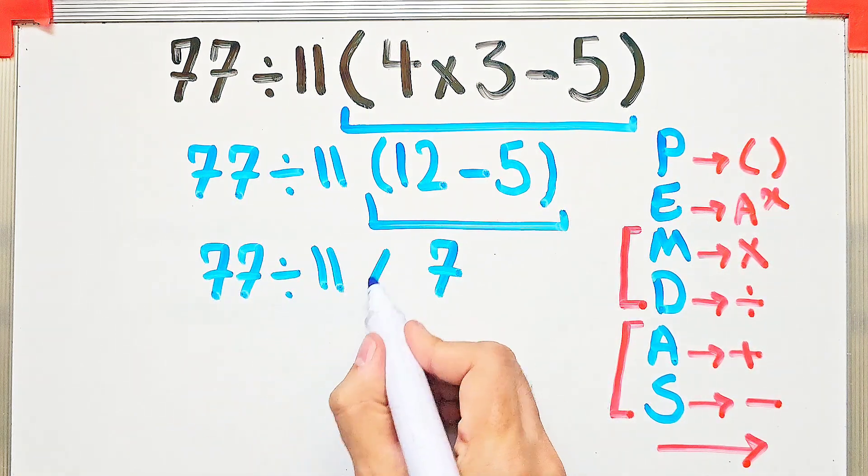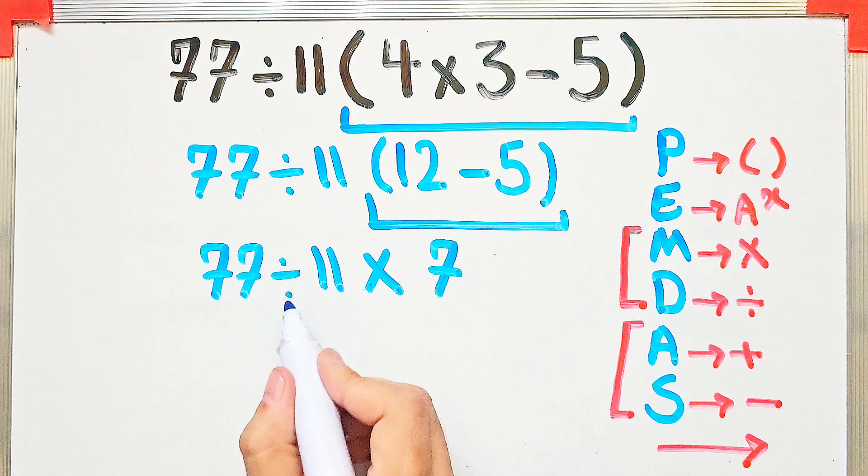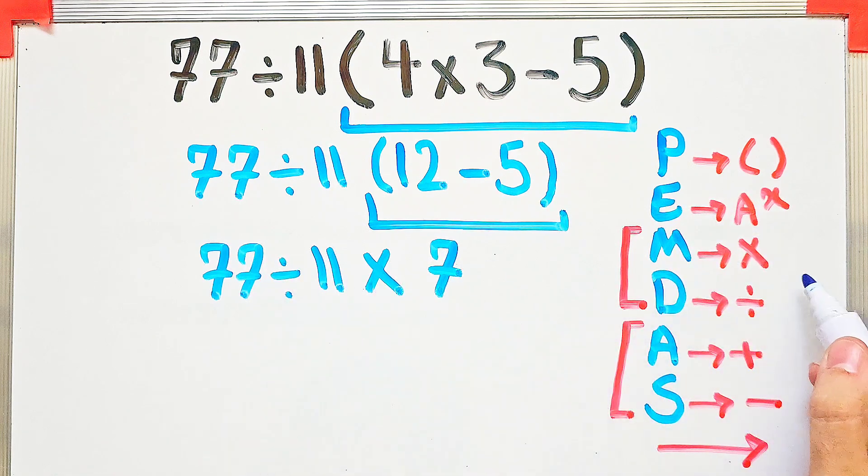by 11 then times 7. Because we have multiplication and division, we start from the left and simplify the question. 77 divided by 11 equals 7.